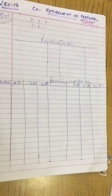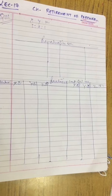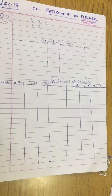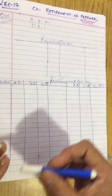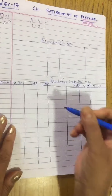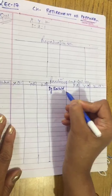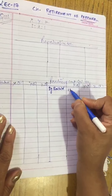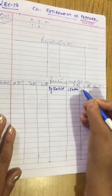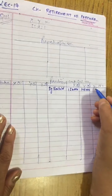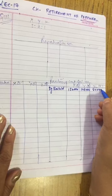Sundry creditors 51,000; employees provident fund 9,000 — employees provident fund is never distributed among the partners as it is an outside liability. Capitals of X, Y, Z: X's capital 1,52,000; Y's capital 1,48,000; and Z's capital 84,000.